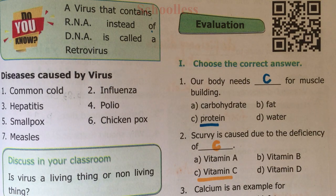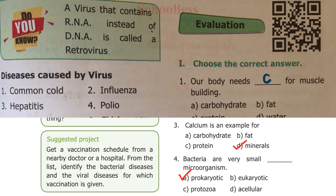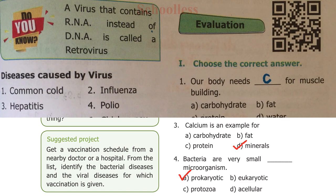Question Three: Calcium is an example for A) Carbohydrate, B) Fat, C) Protein, or D) Minerals. Calcium is a mineral, so D is the right answer.